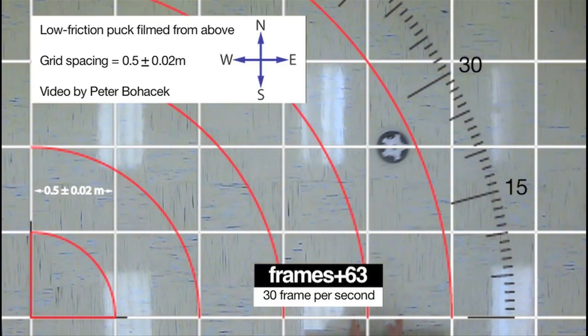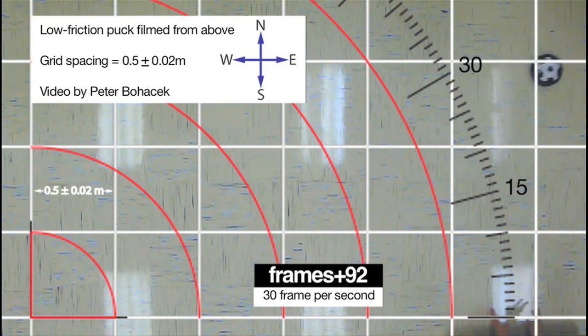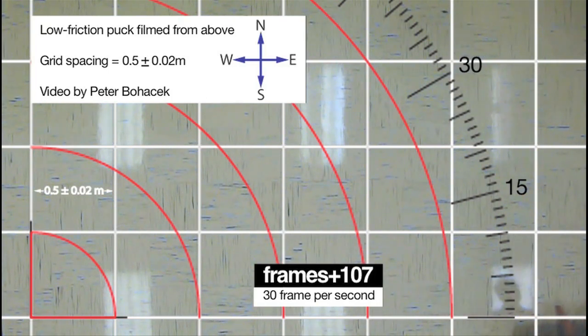Students add those two velocity components to find the direction that the puck is traveling. They compare their calculated angle with the angle at which the puck passes over the protractor.